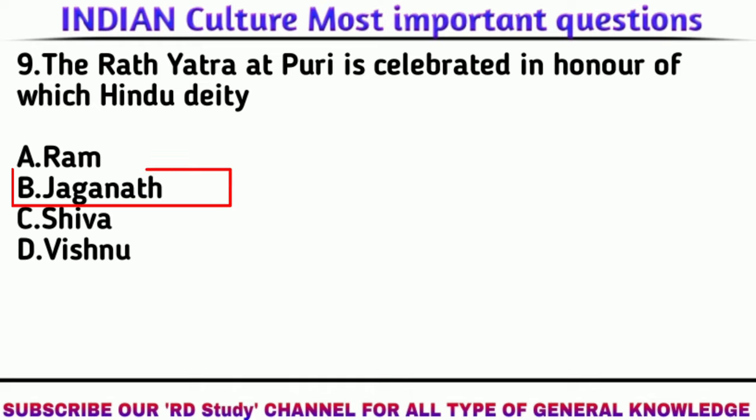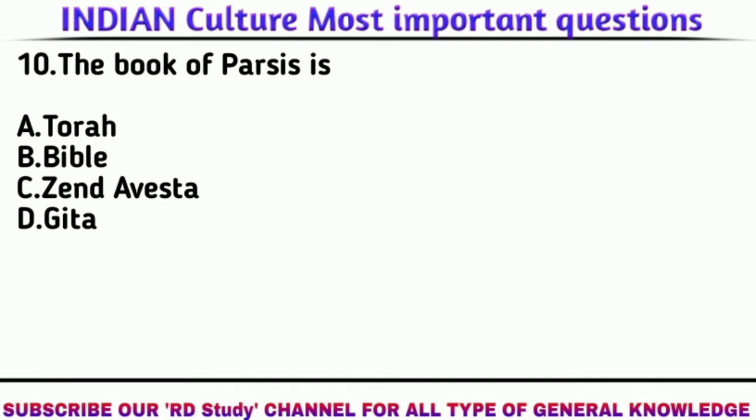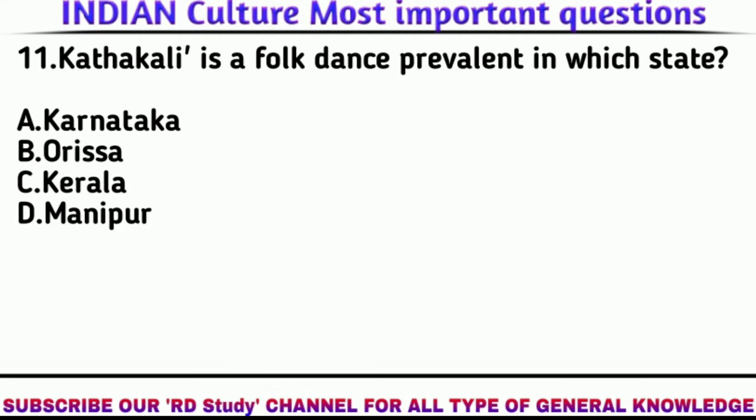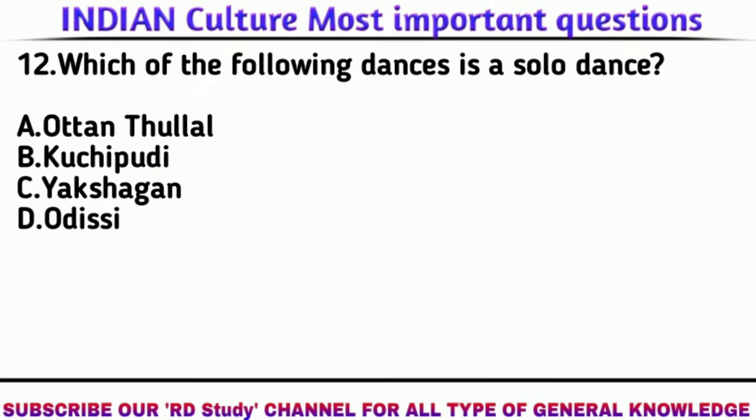Answer: Jagannath. Question 10: The book of the Parsis is? Answer: Zend-Avesta. Question 11: Kathakali is a folk dance prevalent in which state? Answer: Kerala.